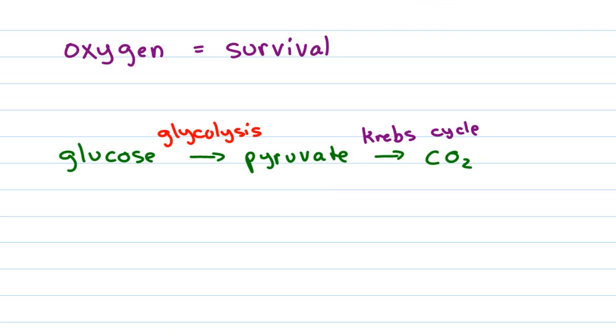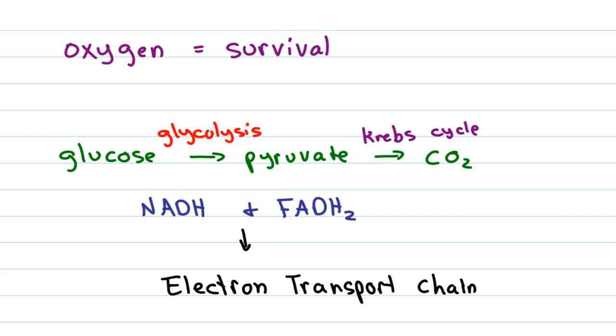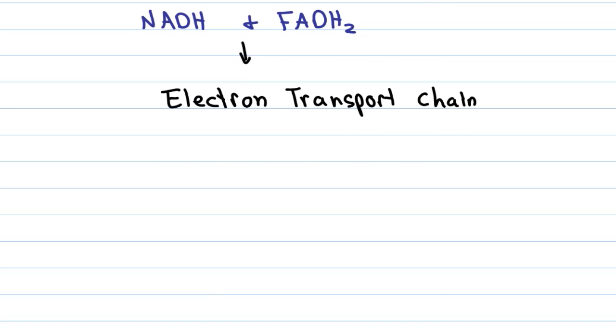But in the process of breaking down the pyruvate in the Krebs cycle, we harvest high energy electrons which are carried as NADH and FADH2. Those electrons are taken to the electron transport chain and turned into energy through oxidative phosphorylation. In order to keep the electron transport chain going, we need a molecule to accept those electrons and that's where oxygen comes in. Oxygen is a terminal electron acceptor which binds to those electrons, binds to protons and is released as water. Without the oxygen, the entire electron transport chain will stop, the Krebs cycle will stop and suddenly the production of ATP is slowed down.